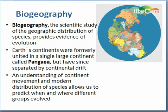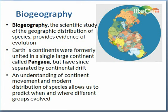Some definitions in biogeography include an endemic species, which is a species not found anywhere else in the world. Islands have many endemic species that are often closely related to species on the nearest mainland or nearby island. Darwin explained that species from the mainland must have colonized the islands and gave rise to new species as they adapted to the new environments.